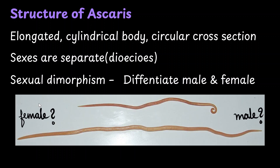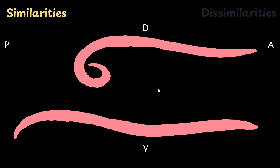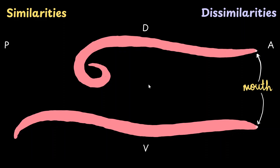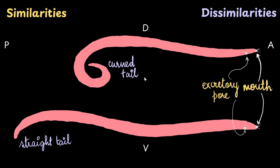Which do you think is the male and female over here? If you have guessed this as the male and this as the female, you are right. So this is the male worm and the female worm. They have some features which are similar between them and some which are dissimilar. This is the anterior part of the worm, the posterior part, the dorsal part and the ventral part. Both sexes have a mouth present at the extreme anterior end, surrounded by three chitinous lips. Below the mouth there is an opening called the excretory pore. One worm is straight and the other is curled — that's a major indicator for the sex. The curled posterior represents a male and a straight tail represents a female.